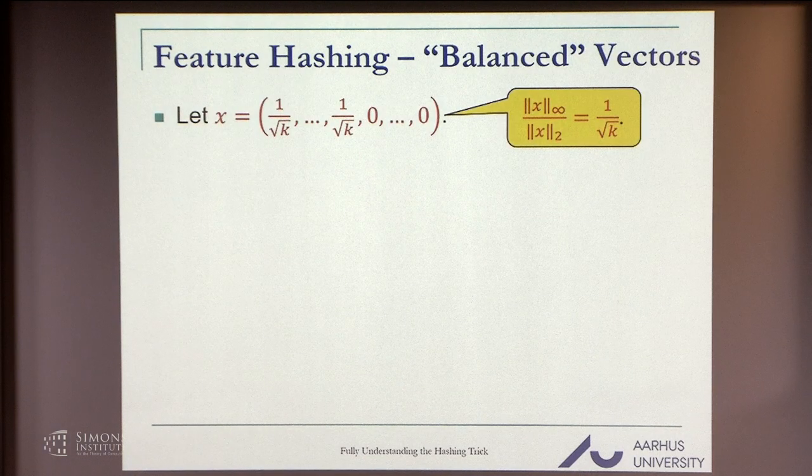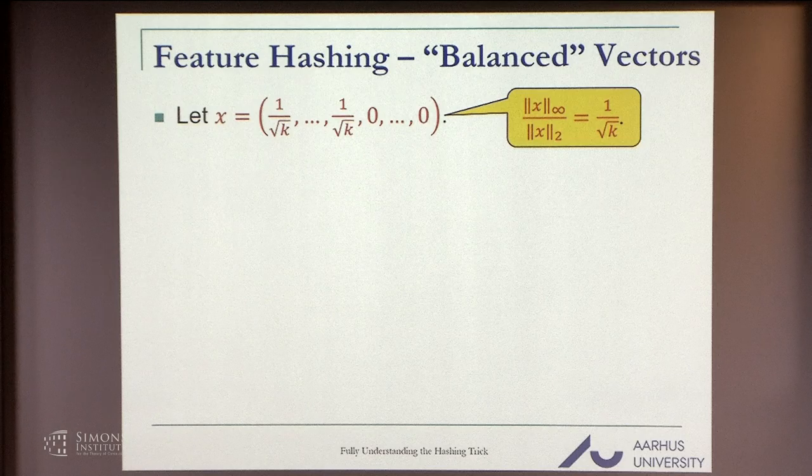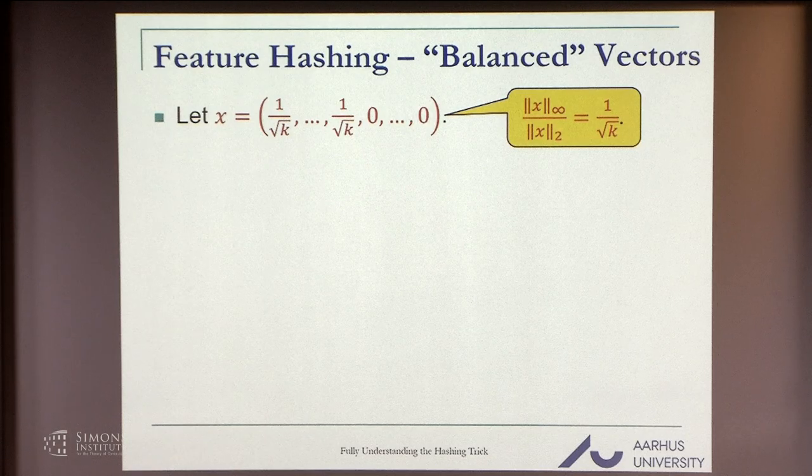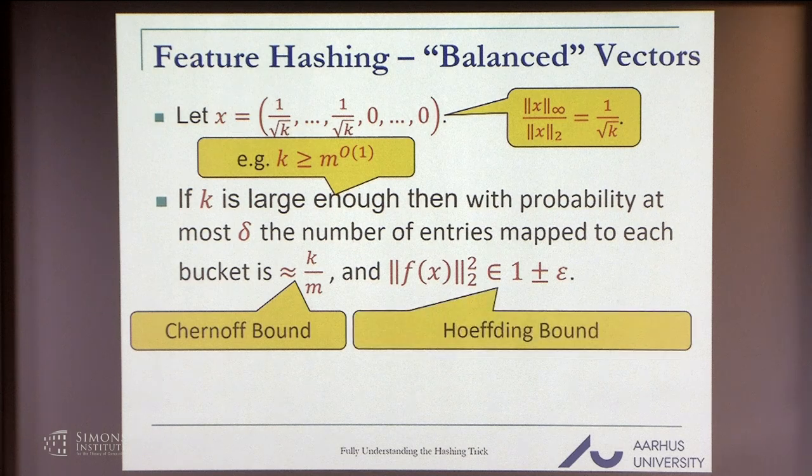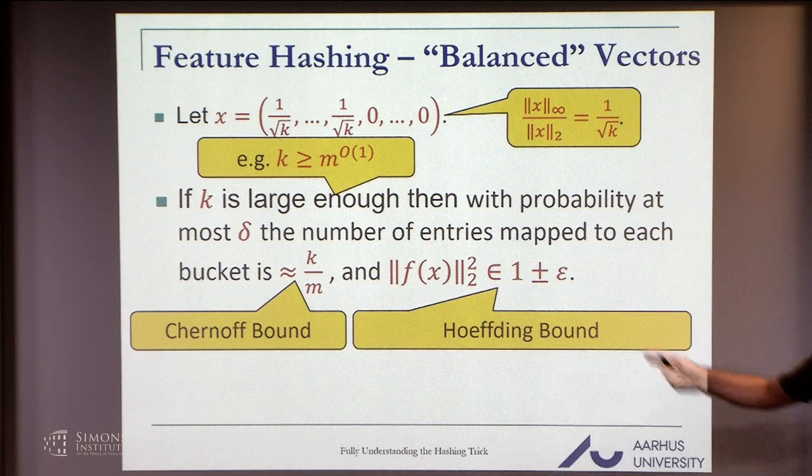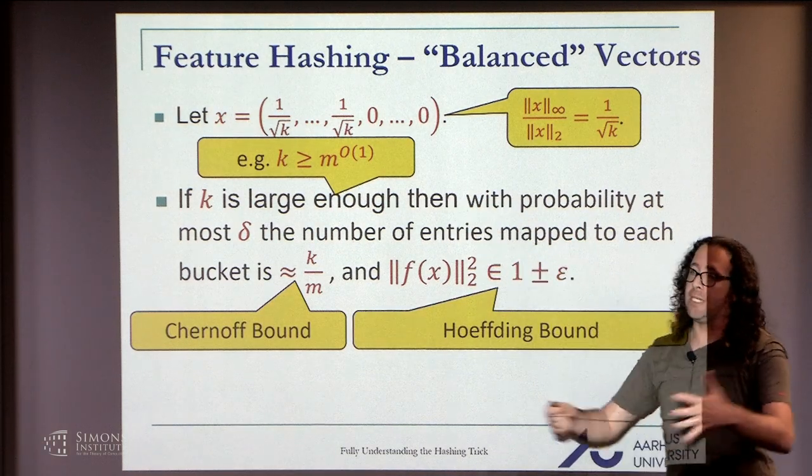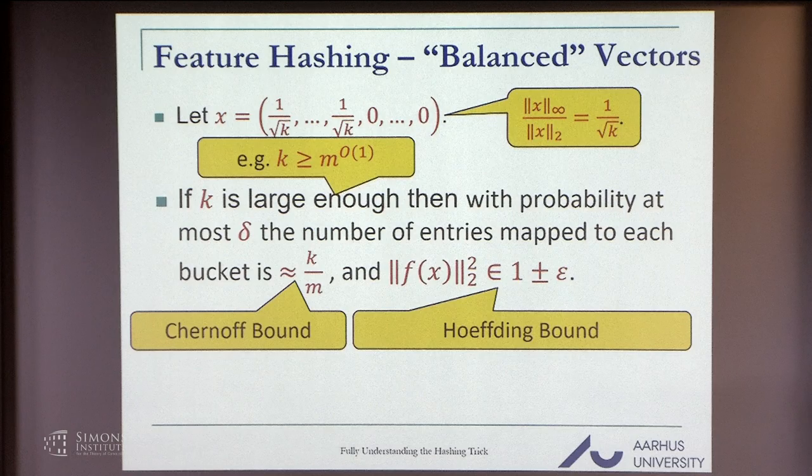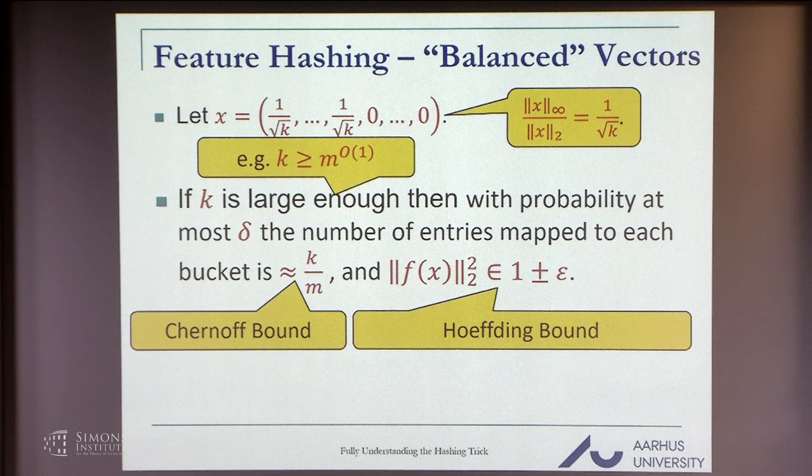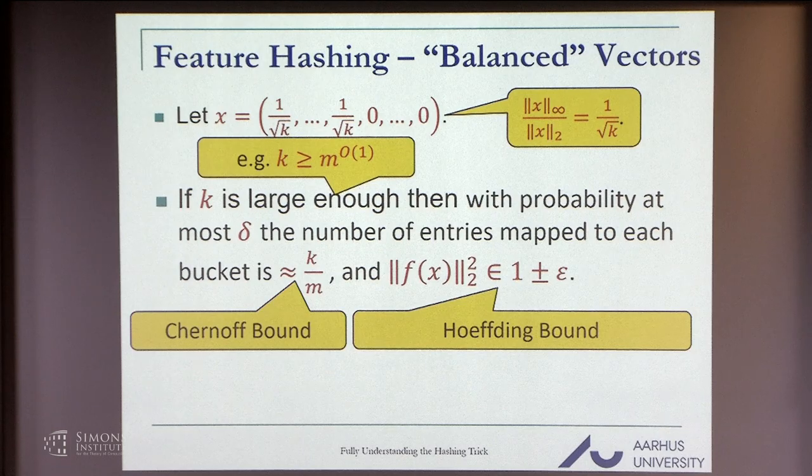Why does it work well in practice? One parameter which you should pay attention to is the ratio between the infinity norm of x and the L2 norm of x. The infinity norm is just the largest coordinate of x. What happens if x is more balanced? What happens if the mass of x is not concentrated in very few coordinates?